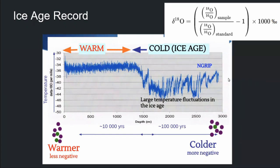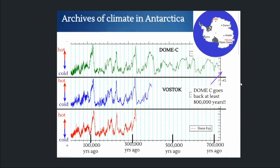Your snow will have way more O16 than O18 during an ice age in particular. So the important concept here is: if the delta O18 is higher than usual, the climate is warmer than usual. If the delta O18 is lower, then the climate is colder. And we can do that over hundreds of thousands of years.